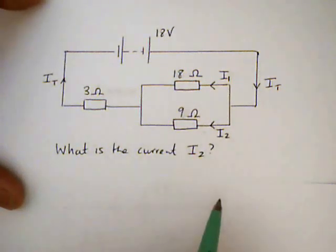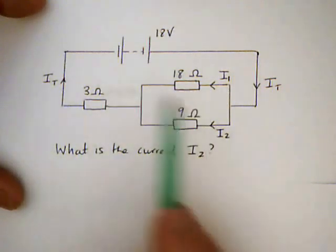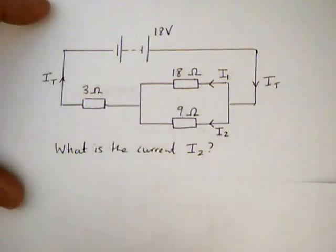We're going to start off by simplifying the circuit and replacing all of these three resistors by just one resistor. So first of all, we can simplify the parallel network.